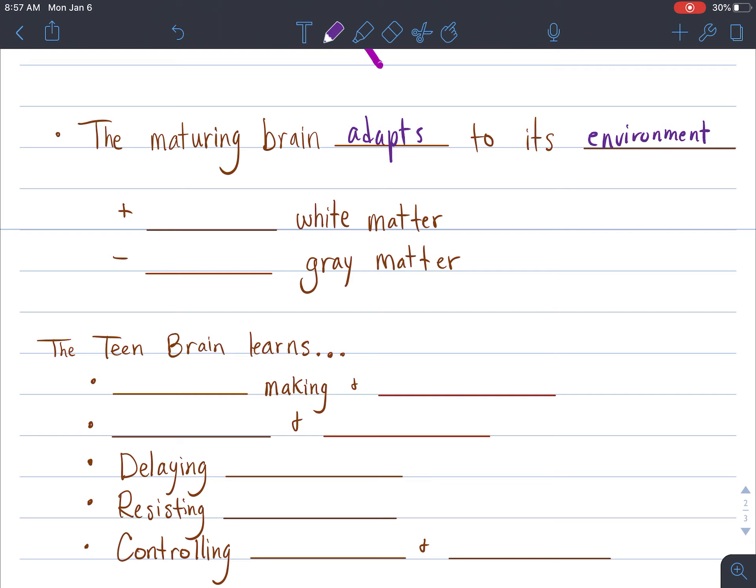In order to do this, as we learned in our last unit about the brain, for our brain to mature we need to gain white matter. So as our brain matures and adapts to its environment, it's going to gain white matter and prune the gray matter.